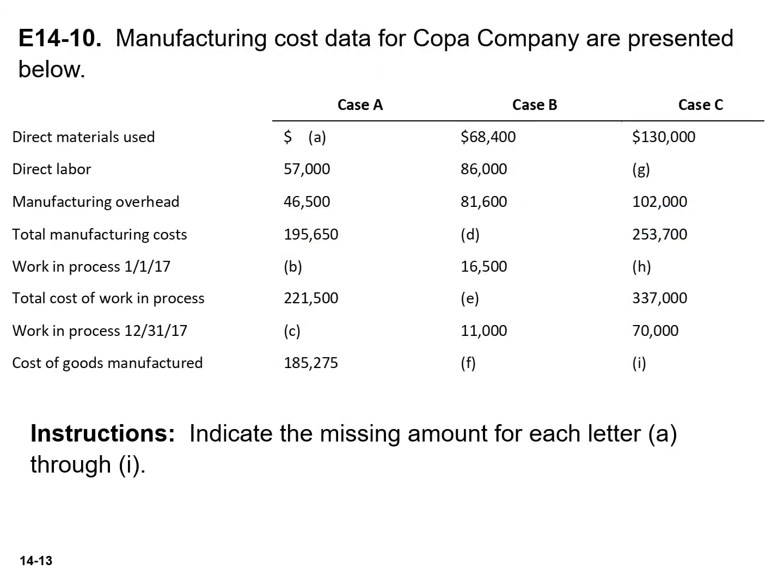For this exercise, you need to indicate the missing amount for each letter. For letter A, we need to determine the direct materials used. We know that our total manufacturing costs are $195,650, and that our direct labor and manufacturing overhead are $57,000 and $46,500, respectively, totaling $103,500. If we subtract that from our total manufacturing cost, we get direct materials used of $92,150. You'll do a similar exercise for the other missing letters.